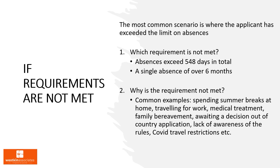There are many common scenarios as to why someone may have breached or be close to breaching their continuous residence. For the total absences, it may be due to having returned home during summer breaks during school or university years, or because travel was enforced by work, or simply due to lack of awareness of the rules. For the six-month rule, absences may have been breached because of medical treatment, family bereavement, or more recently due to COVID travel restrictions.